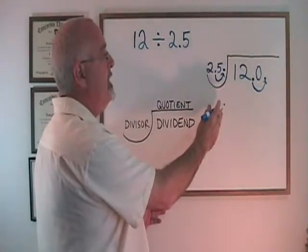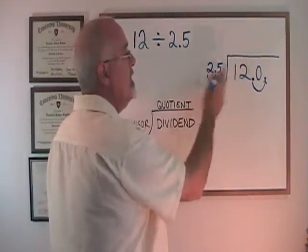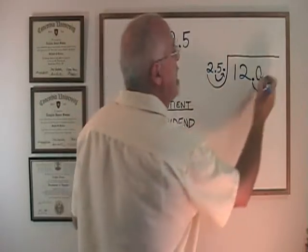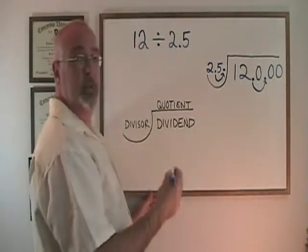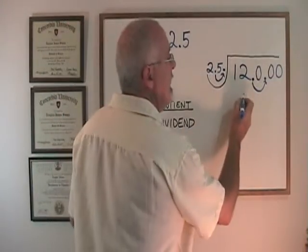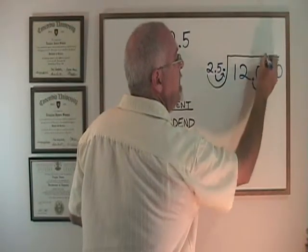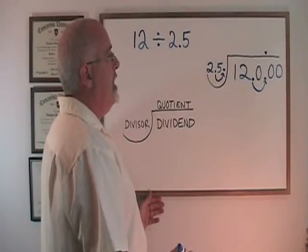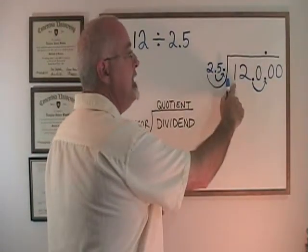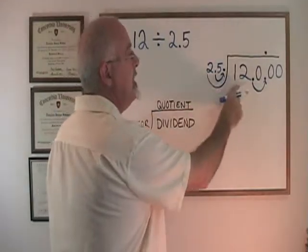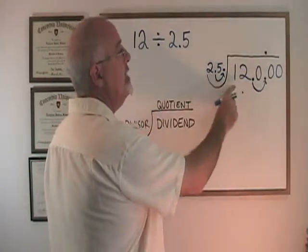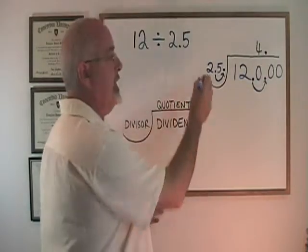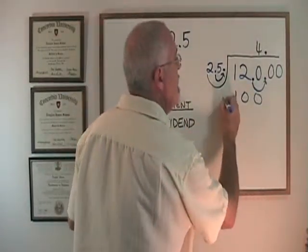Now I am set up to do my division and it looks like I am dividing 120 by 25, which is equivalent to the original division. I put extra zeros — as many as I want — to the right of the decimal in my dividend. And the new position of the decimal in the dividend: I put the decimal in the quotient right above that. I ask myself: does 25 fit into 1? No. Does 25 fit into 12? No. Does 25 fit into 120? Yes — four times with some left over. So I put the 4 here. 4 times 25 is 100. I write that here and I subtract.